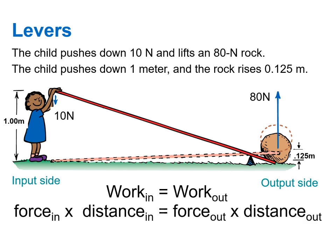If you put this into equation form, the force and distance on the left should equal the force and distance on the right. Looking at the numbers, we in fact get 10 Newtons times one meter equals 80 Newtons times 0.125 meters. And if you check, 10 times one does in fact equal 80 times 0.125.